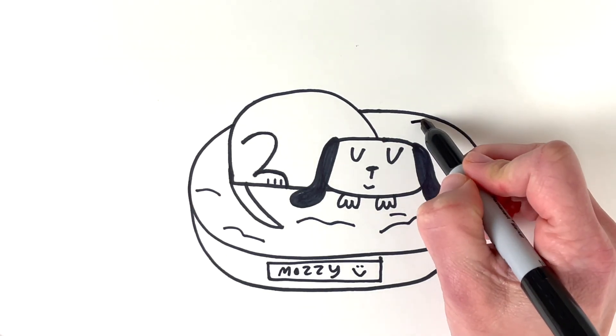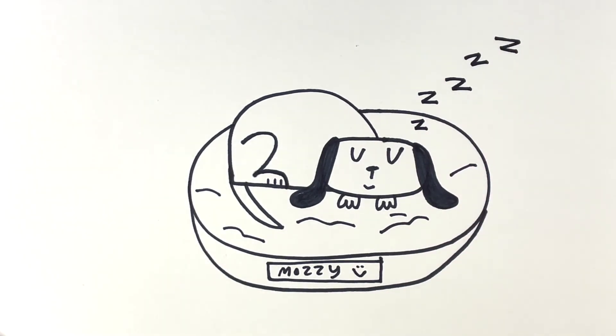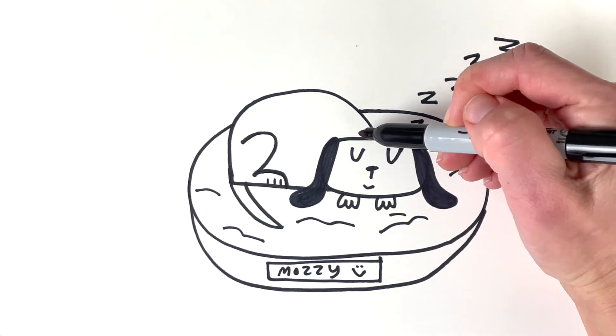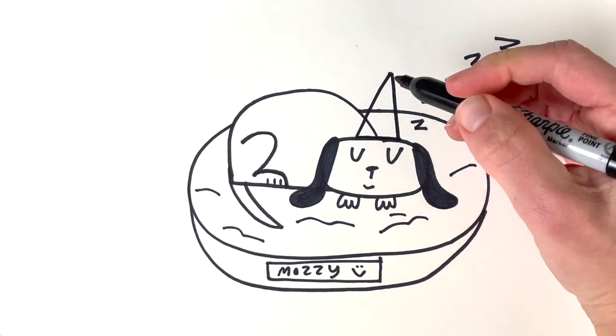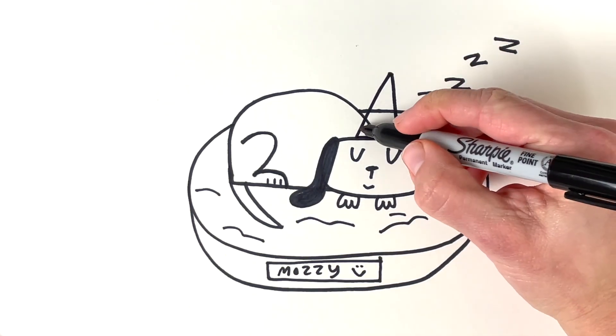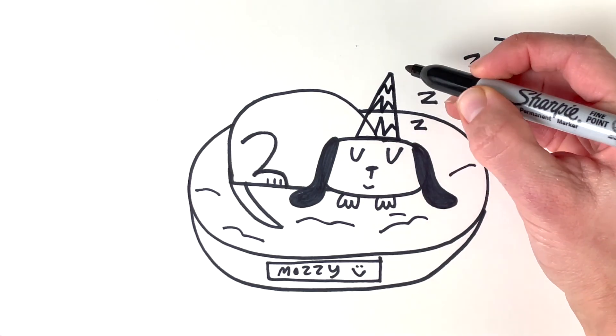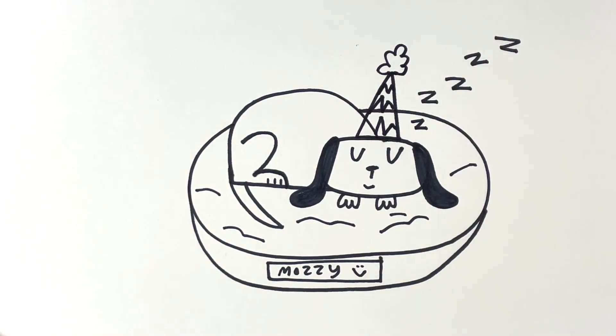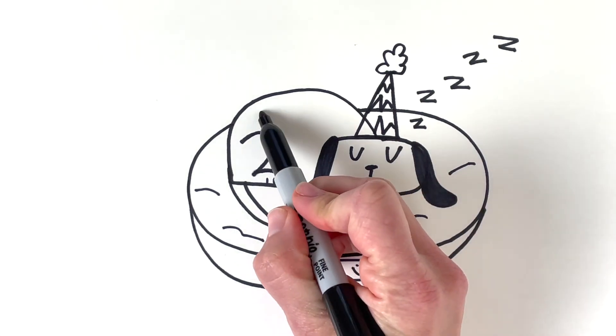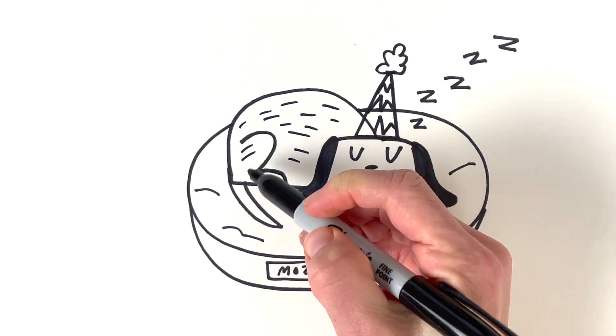Oh, don't forget. He's got to be sleeping, right? I'll put a party hat. He's just so tired from his party. And I will do some zigzags. Just too much fun had at the party. Oh, and maybe I'll add some little fur lines. Cute.